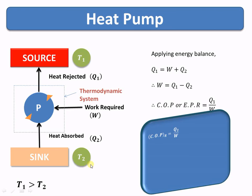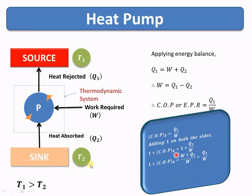The coefficient of performance of the refrigerator system is Q2 divided by W. Adding one on both sides of this equation gives (W plus Q2) divided by W, which from the energy balance equation equals Q1 divided by W — and Q1 divided by W is the coefficient of performance of the heat pump. Therefore, the relation between the two is: one plus COP of the refrigeration system equals the coefficient of performance of the heat pump.